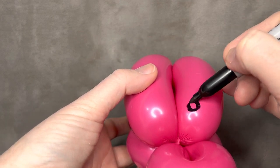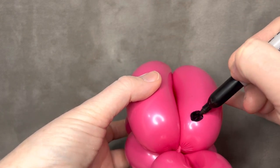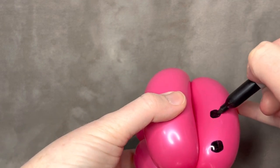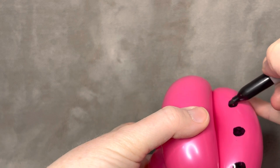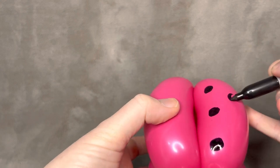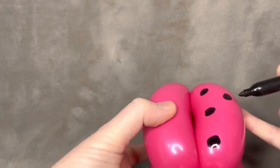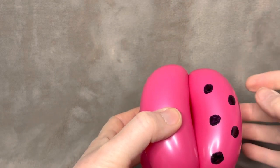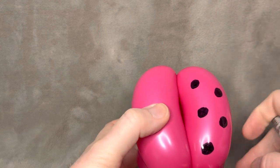So with the side of your marker, we want to put at least five dots on here on each side, and you want them to offset each other, kind of like how dice would. They wouldn't be right beside each other.